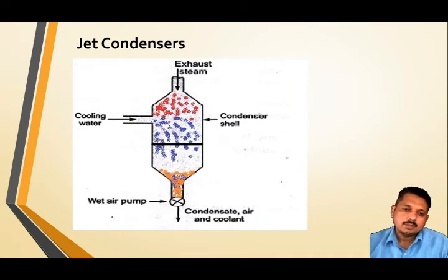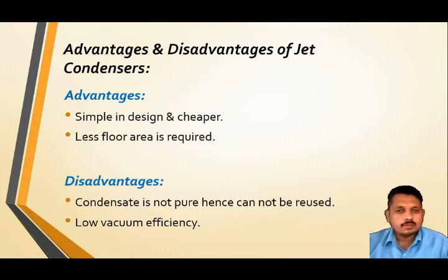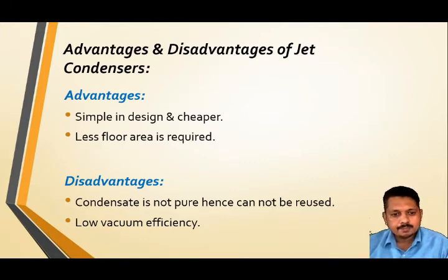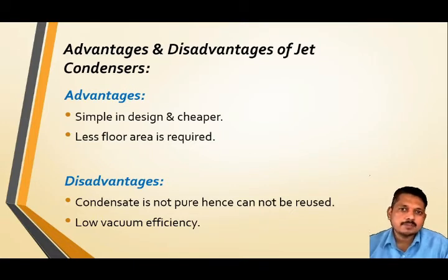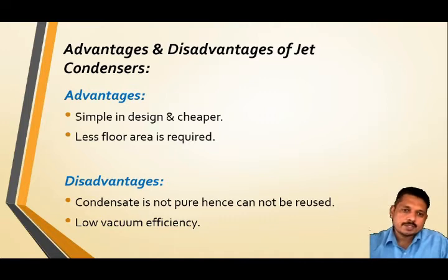Now let's see the advantages and disadvantages of the jet type condenser. It is very simple and cheaper in design; we don't need any separate assembly, which is why it is cheaper. Less floor area is required as direct mixing is possible. However, it has some disadvantages: the condensate is not pure because we directly mix the steam with external water which may contain impurities. We cannot use it again for feed water until it is purified, and vacuum efficiency is also less.